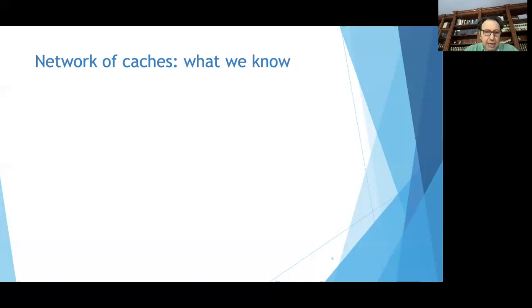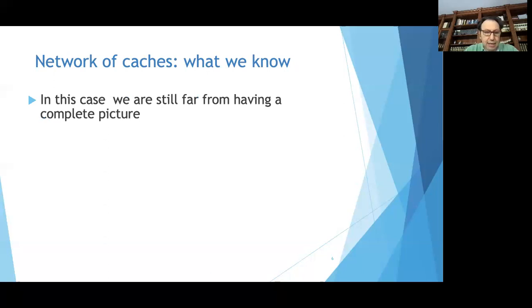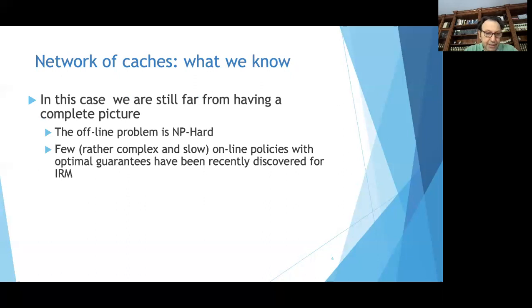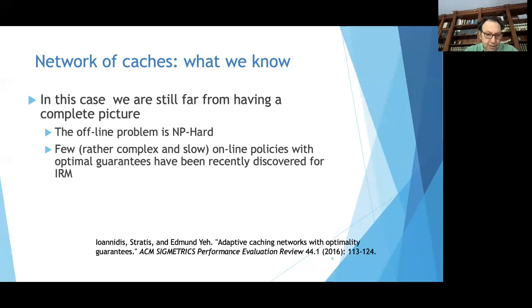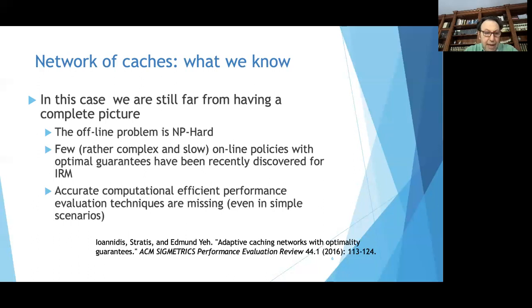When we move to network caches, the picture is much more blurred. The offline problem is NP-hard. There are very few complex policies for which some optimality guarantees have been shown, but those policies are typically hard to implement. We also completely lack efficient performance evaluation techniques, even in simple scenarios like networks of caches with tree or linear structure.